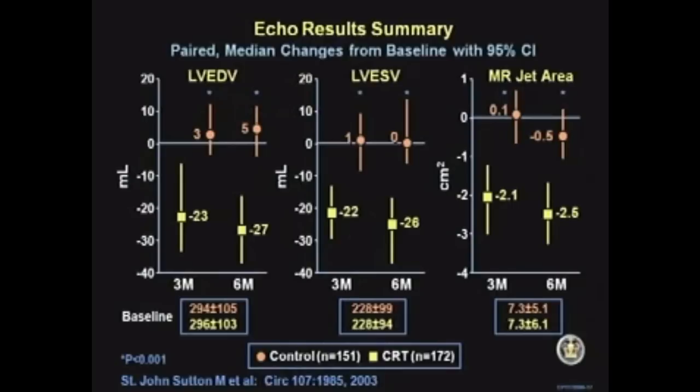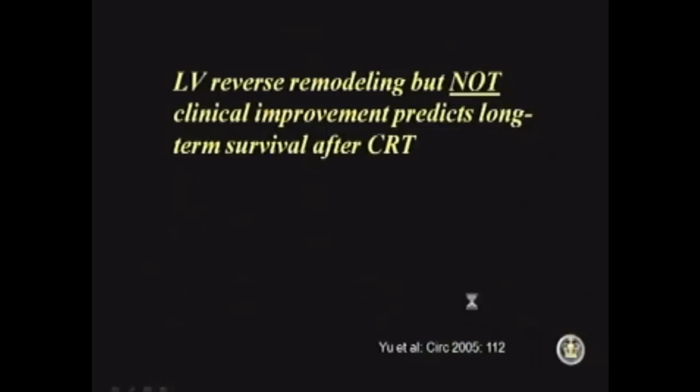In addition, if you look at the echo parameters, you can see that controls versus the yellow bars — patients with cardiac resynchronization — show that the ventricle begins to shrink: reverse remodeling. We're talking about the cardiac chambers dilating; now with bi-V pacing, the chambers begin to shrink. The end diastolic volume and systolic volume decrease compared to control, and the degree of mitral regurgitation improves. So all the parameters I was talking about start reversing.